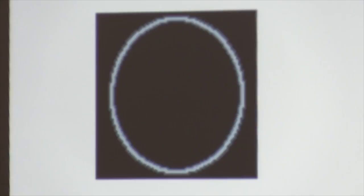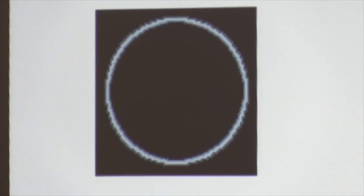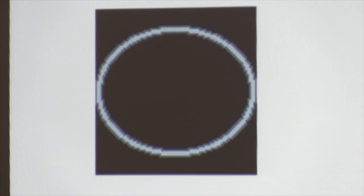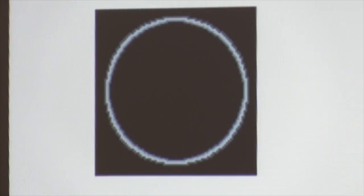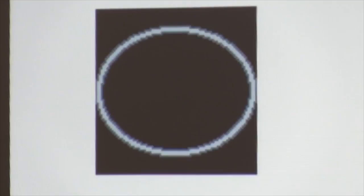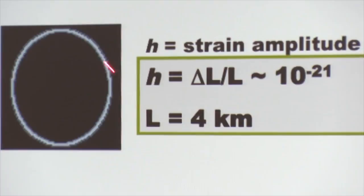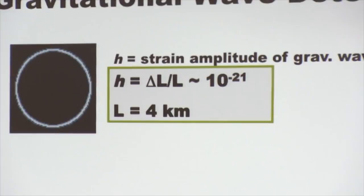All detectors share the same principle of operation. Imagine free masses arranged in a ring in vacuum. A gravitational wave passing through causes a compression in one dimension and extension in the other, cycling back and forth — though highly exaggerated in diagrams since the actual strain is 10 to the negative 21. If you build the ring to be really big, that scales up. With 4-kilometer arms, you only need to measure 10 to the negative 18 meters — a thousandth the size of a proton — which is what LIGO actually does.